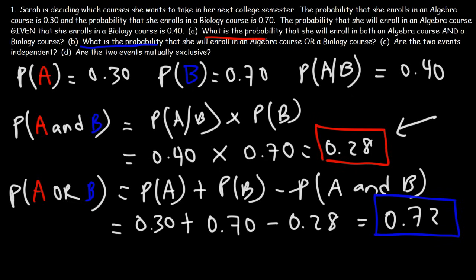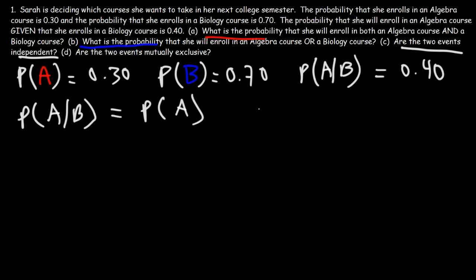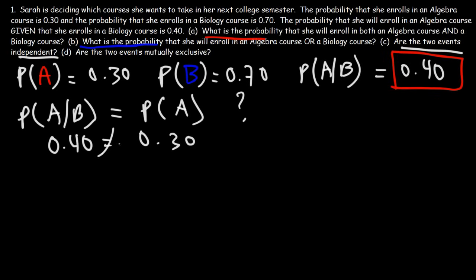For Part C: are the two events independent? In order for events A and B to be independent, the probability of A given B must equal the probability of A. The probability of A given B is 0.4, and the probability of event A occurring is 0.3. These two are not equal, therefore the two events are not independent of each other.